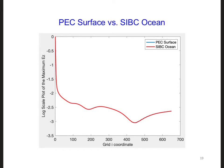Since the ocean is an even better conductor than the ground, and the loss tangent for the ocean is so large, we can see here that the results are basically identical for a PEC versus an ocean SIBC. This means that for propagation over the ocean we can get away with just using a PEC, although for mixed propagation paths it will be easier to just use the SIBC everywhere, so it works over land as well as over the ocean.